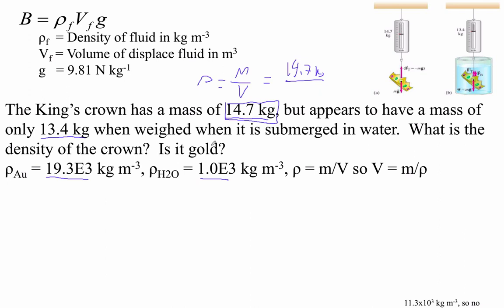And so when you put the crown in the water, notice that it's 14.7. But it appears on the scale to have a mass of 13.4. Okay, this difference, this 1.3 kilogram difference, is that right? 14.7 minus 13.4.